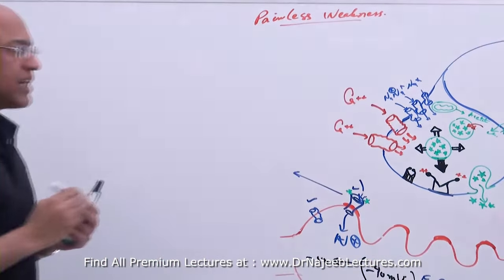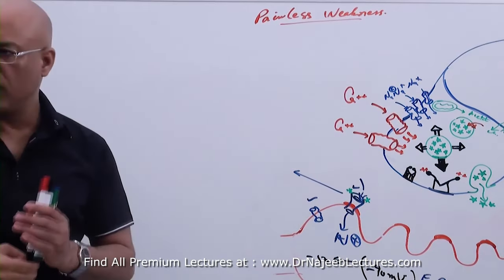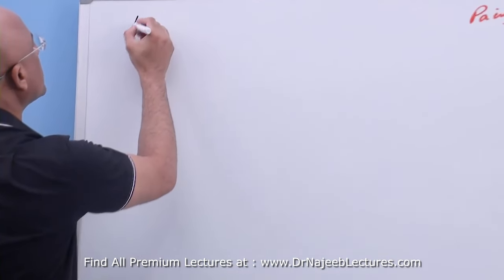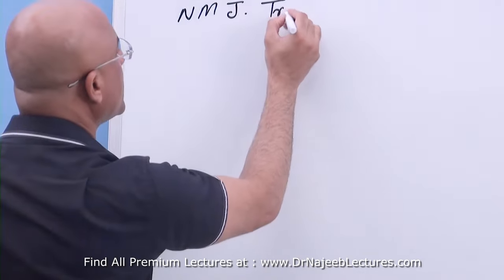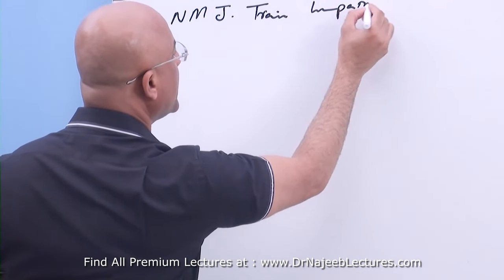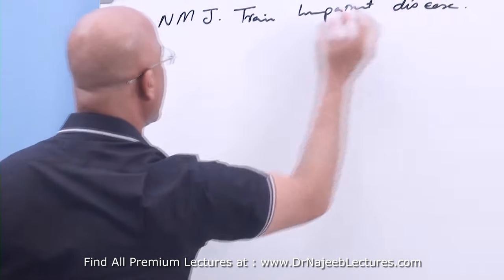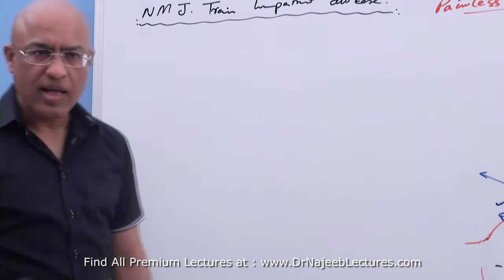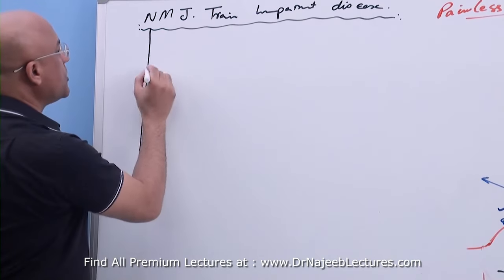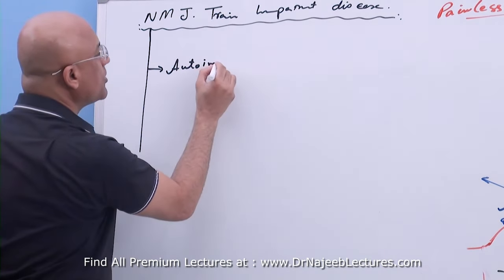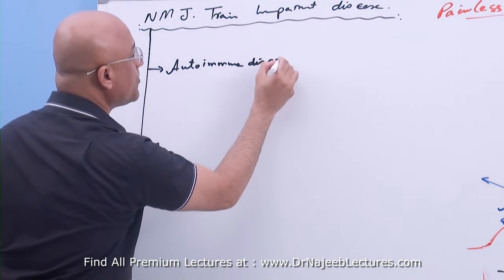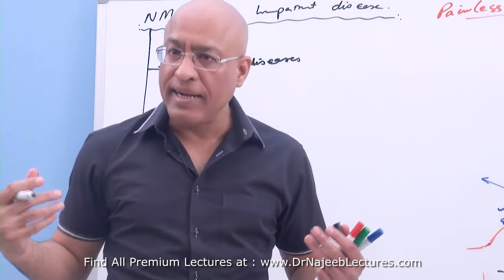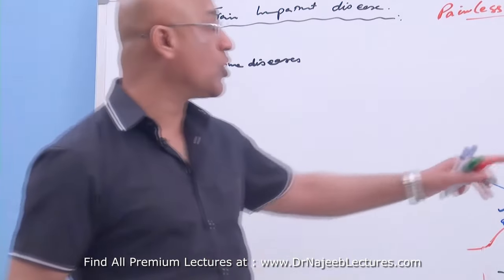What are the different types of neuromuscular transmission-related diseases? The diseases which impair or reduce neuromuscular junction function can be grouped as follows. Number one, there are autoimmune diseases, in which your own immune system produces antibodies directed against your neuromuscular junction components.